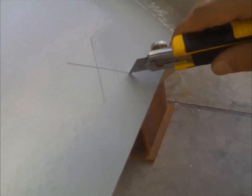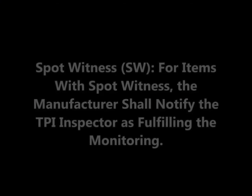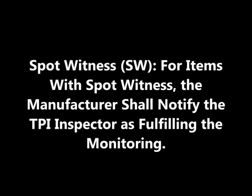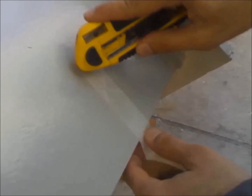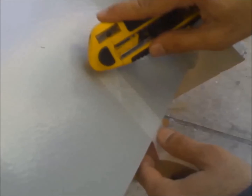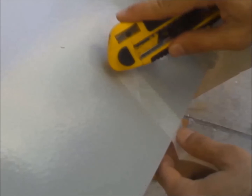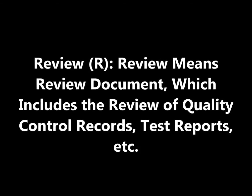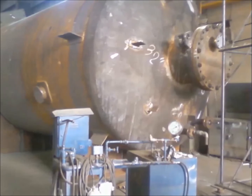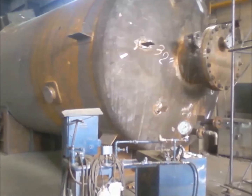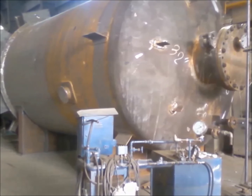For items with a spot witness designation, the manufacturer shall notify the TPI inspector to fulfill monitoring requirements — for example, one random visit for all UT tests, or one of two visits for entire surface preparation work for painting. Review means reviewing documents, which includes quality control records, test reports, etc. When the TPI inspector makes a visit for a hold or witness point, the inspector can also review the related documents. Draft ITP documents for each type of equipment can be downloaded through the following web page.